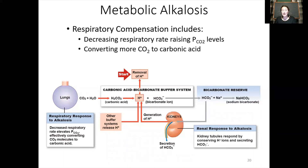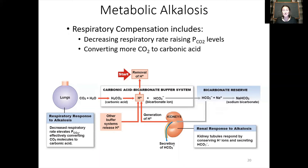So if your roommate is vomiting and you see that they are breathing super slowly, it may be their body trying to compensate for the loss of hydrogen ions in said vomit. They are breathing less so they save more CO2, therefore bringing the pH back down.